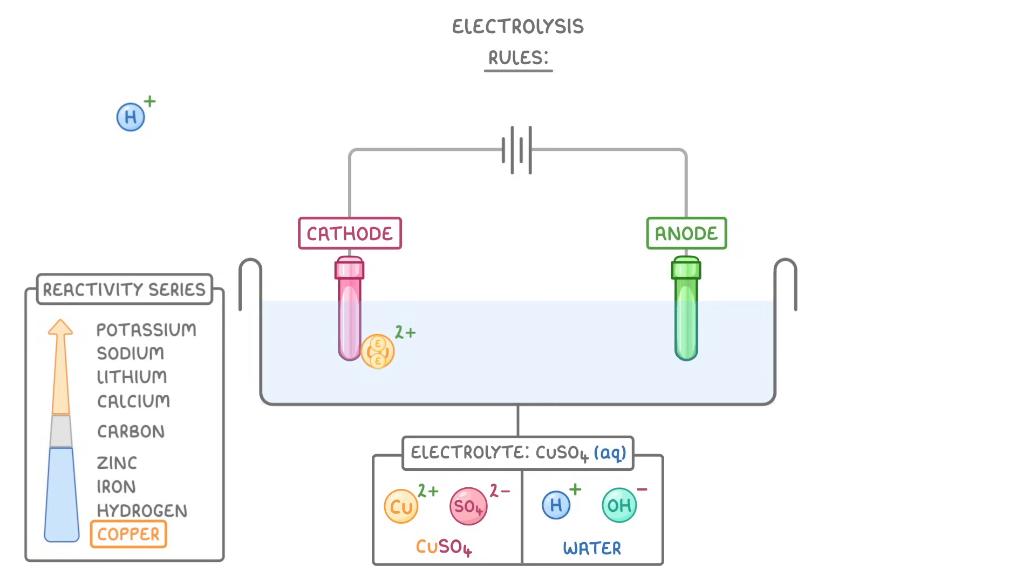So they'll gain 2 electrons from the cathode, and form pure copper. And because all of this is done at normal temperatures, the copper will be solid. So it actually accumulates around the cathode.